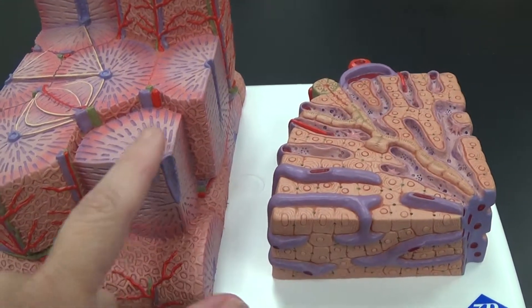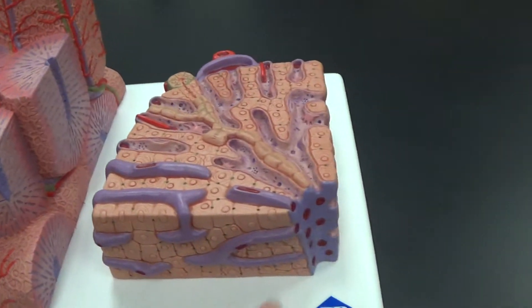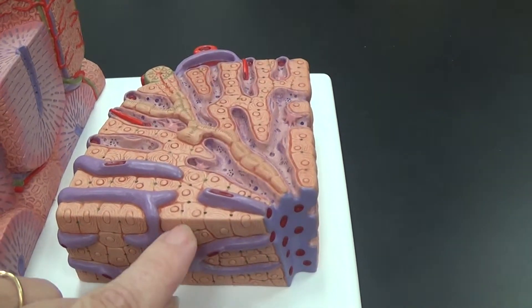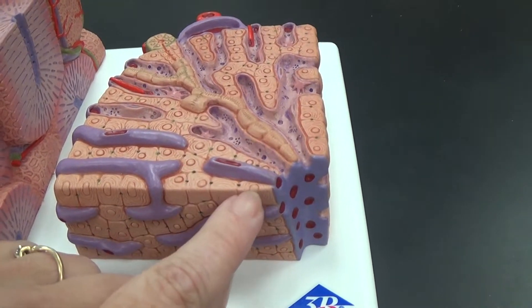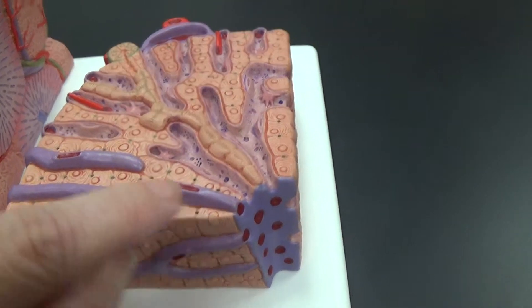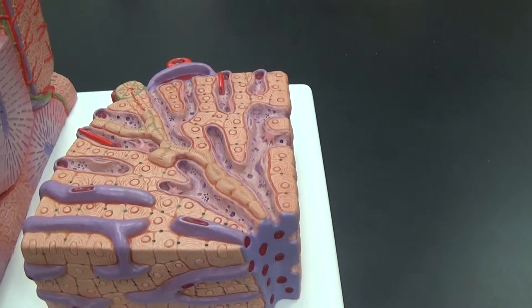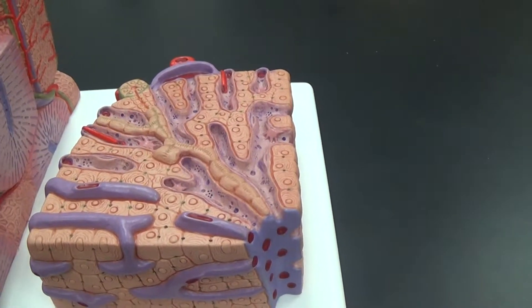Now, this is a close-up of this part of a lobule. So this is the central vein here. We can see many individual cells here. These are hepatocytes. These depressions here in the middle are sinusoids. So sinusoids are lined with hepatocytes.